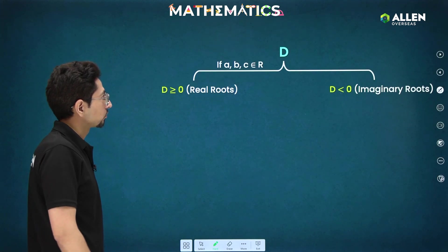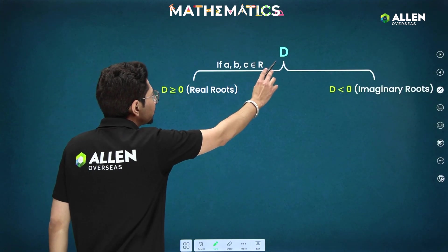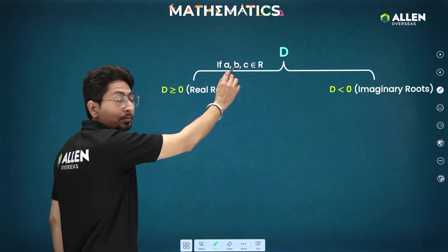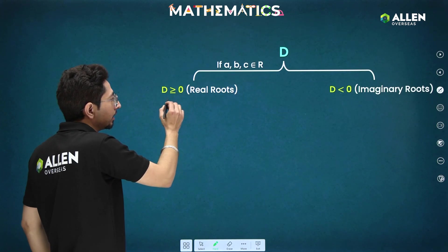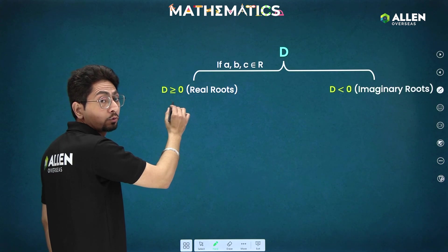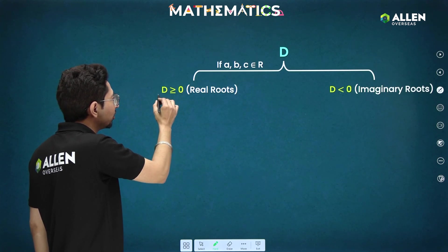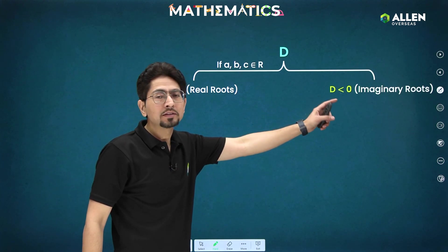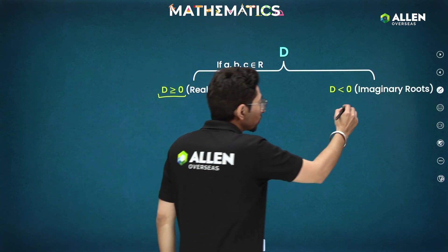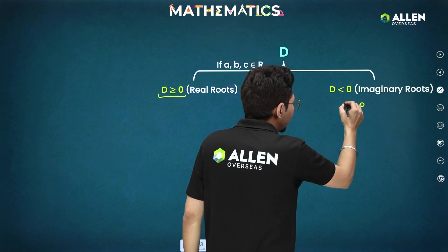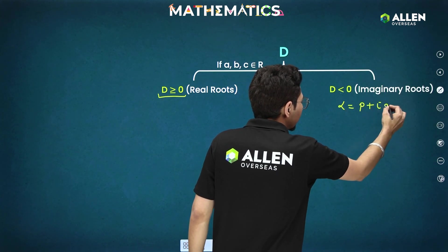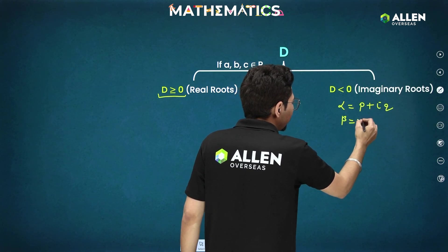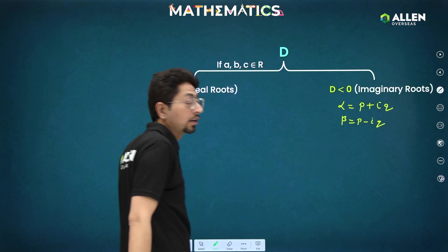Let's see different cases first of all with respect to discriminant. First of all, if a, b, c belong to real numbers, then we have two separate cases: D ≥ 0 or D < 0. D ≥ 0 implies real roots. D < 0 implies imaginary roots. Now imaginary roots occur in conjugate pair. Let's say alpha is p + iq. Then another root will be p - iq. They occur in conjugate pair.